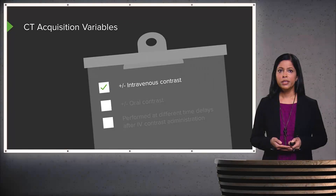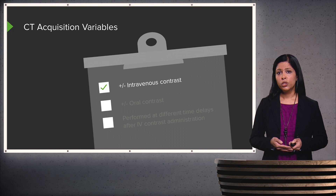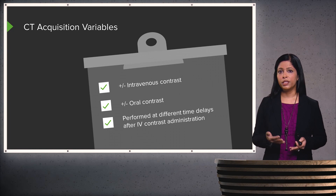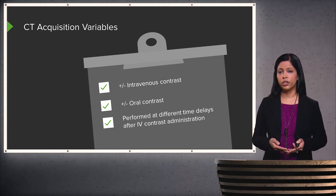What are some different acquisition variables? We can use intravenous contrast, we can use oral contrast, and we can perform the CT scan at different time delays after intravenous contrast administration.